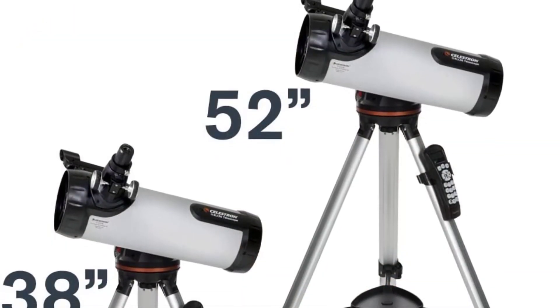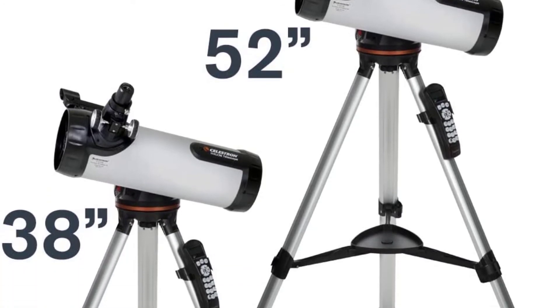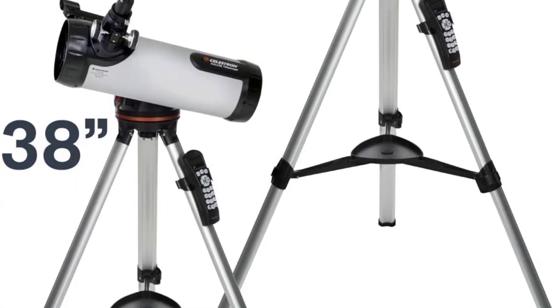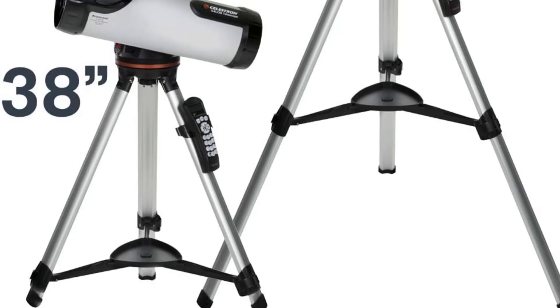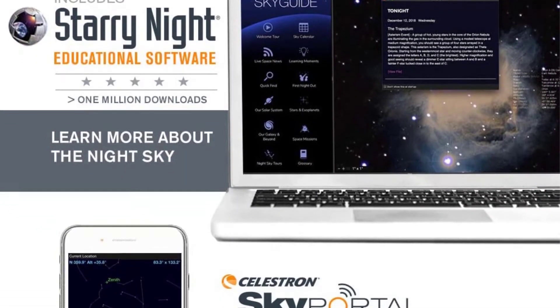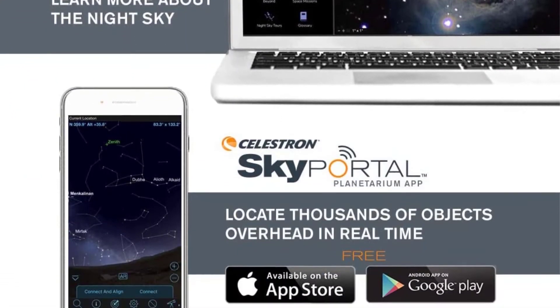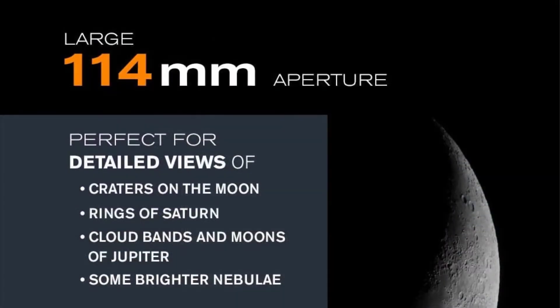Other handy features that both beginners and experts will love are the red dot finder, the two included eyepieces, and the included the sky x planetarium disk. All the features may just make this the best telescope under $300 with goto there is.